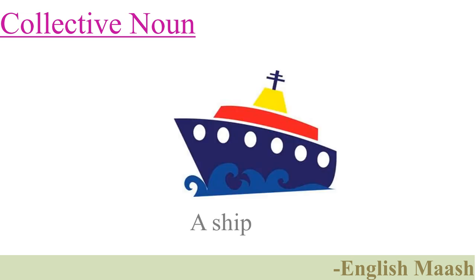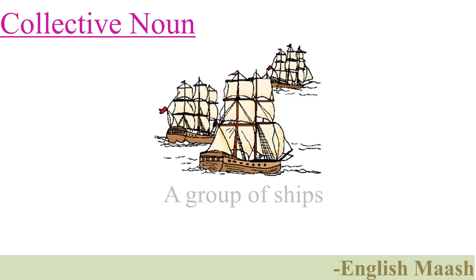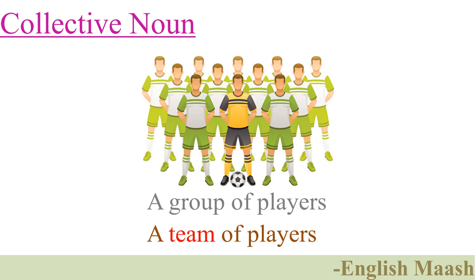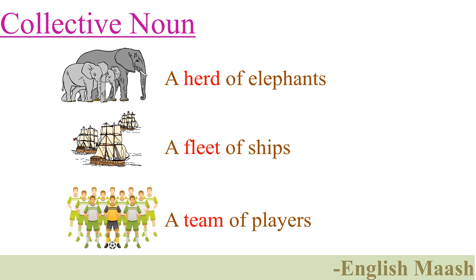Here is a ship. Here is a group of ships. A group of ships is better called a fleet of ships. Here is a player, and a group of players is called a team of players.